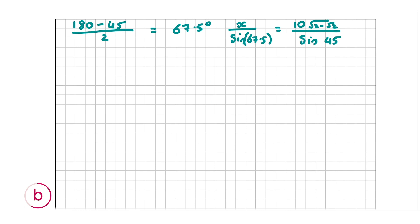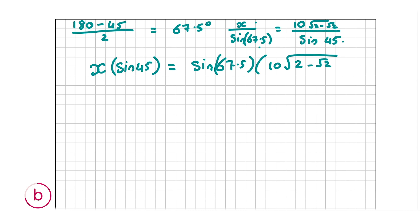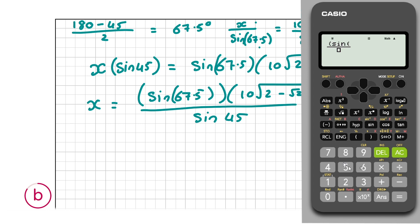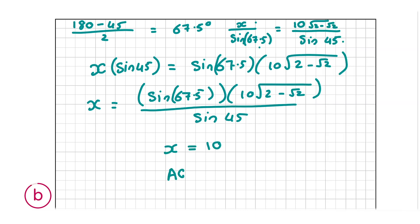Cross-multiplying: X times sin 45 equals sin 67.5 times (10 root 2 minus root 2). So X equals sin 67.5 multiplied by (10 root 2 minus root 2), divided by sin 45. Putting this all into the calculator at once reduces the chance of error. X equals 10, so AC equals 10. That is our final answer, worth 10 marks.